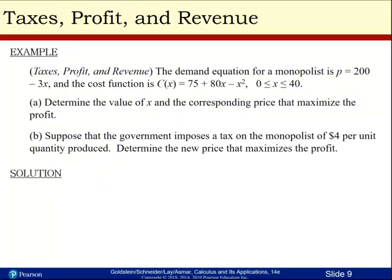Let's look at one more example in this section. We're going to look at taxes, profit, and revenue. The demand equation for a monopolist is p equals 200 minus 3x, and the cost function is 75 plus 80x minus x squared. This is only valid when x is between zero and 40, inclusively. Determine the value of x and the corresponding price that maximize the profit. And suppose that the government imposes a tax on the monopolist of $4 per unit quantity produced, and now we need to determine the new price that maximizes profit.